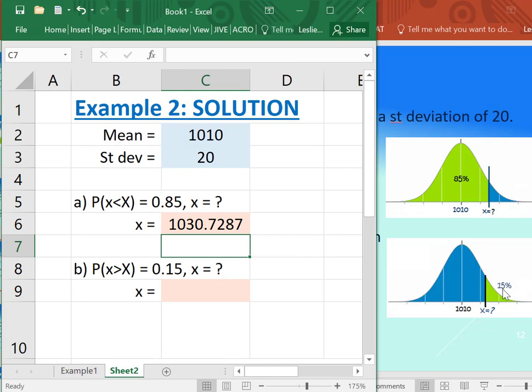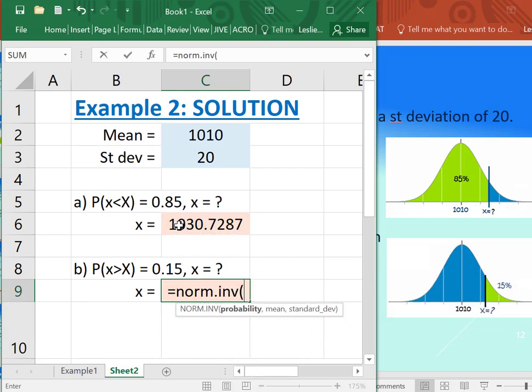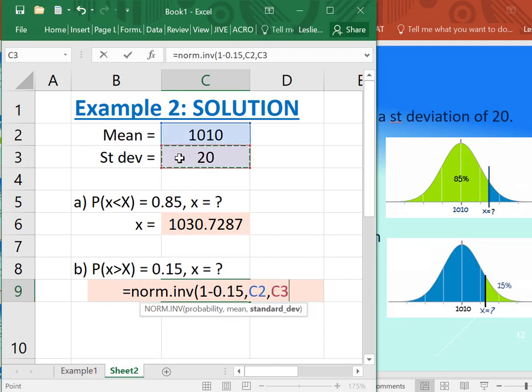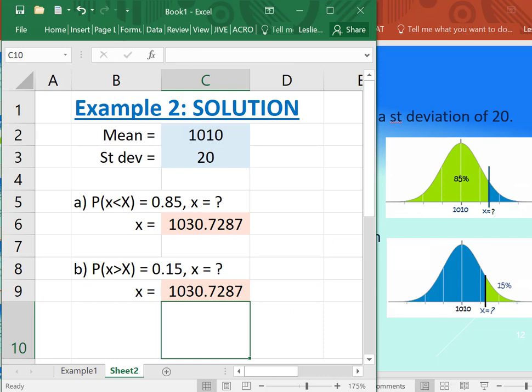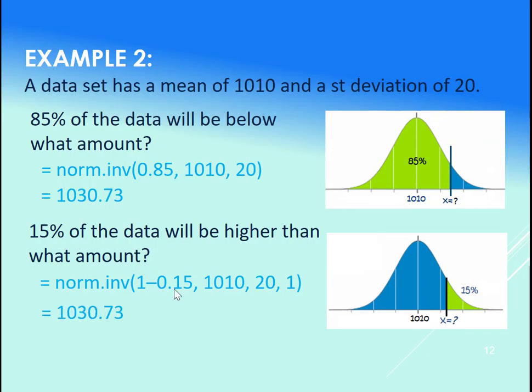And if we want the x value, such that the area to the right is 0.15, well, we could realize it's just the same x value. Or, if you will, we do norm.inv 1 minus the 0.15 comma the 1010 comma the 20. Again, you can lock those if you want or not lock them in this case. We're not copying them down anywhere. So again, they both give 1,030.73.